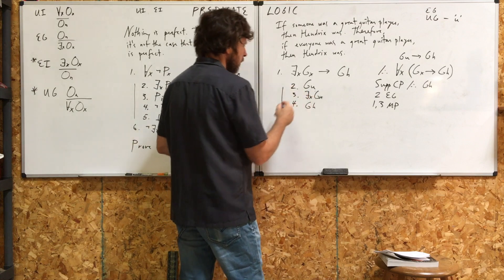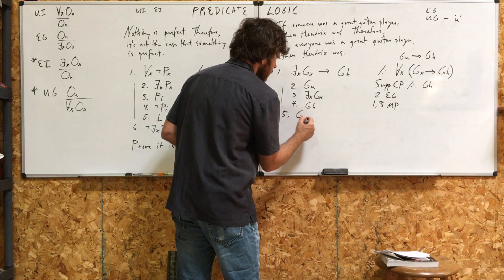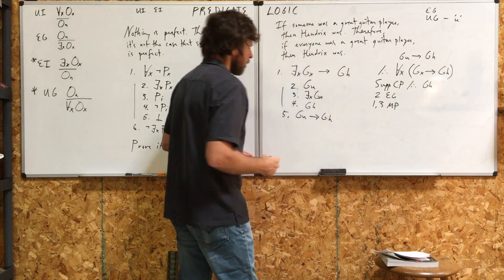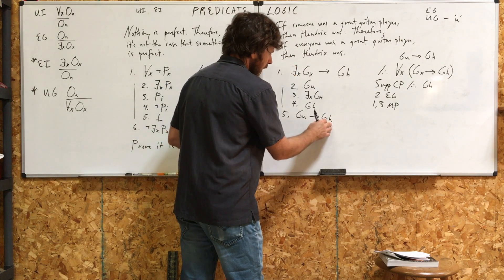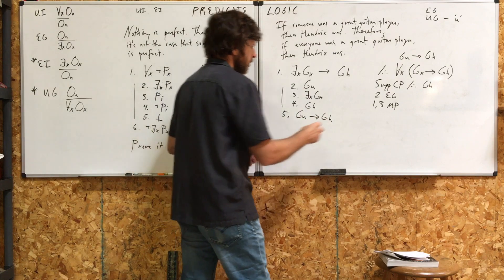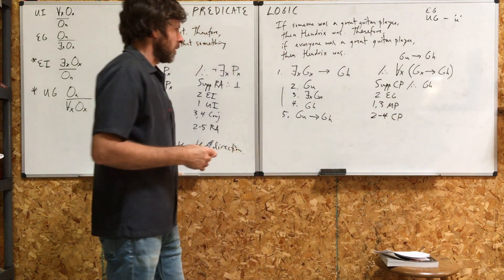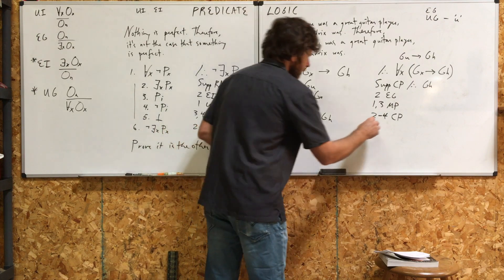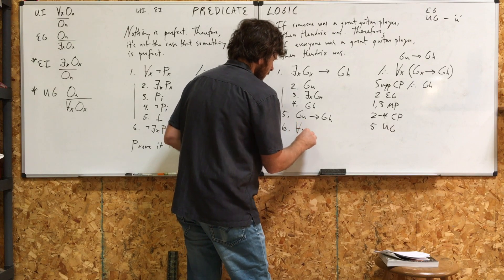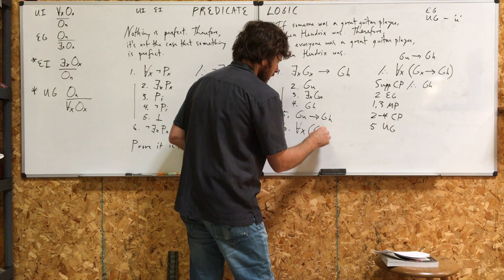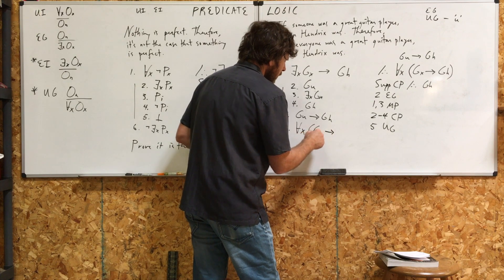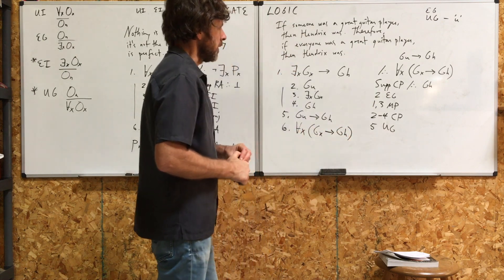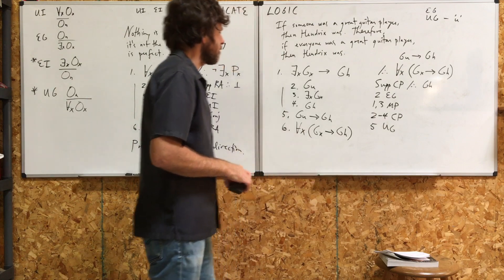Line five. Let's break out of the sub-proof here, this indented proof. We can get GU arrow GH. If U is G, then H is G. Two through four, CP. Now, with line five, we can now use UG. And add universal quantifier to the front here. So, if everyone is a great guitar player, then Hendrix is. Good with that.